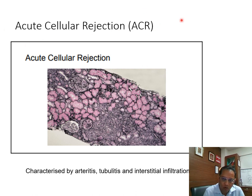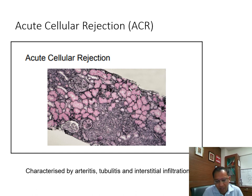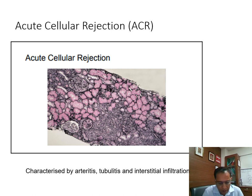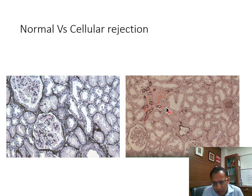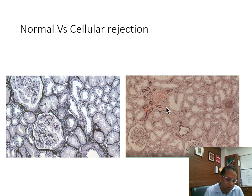The second early challenge is ACR or acute cellular rejection. It is not seen as often nowadays because of the immunosuppressive regimens we follow — they are very potent, and we have good induction protocols. It is characterized by arteriitis, tubulitis, and interstitial infiltration mainly of acute neutrophils and other cells. If you compare a normal kidney biopsy with this cellular rejection, you can see these inflammatory cells have infiltrated, and that is why you can safely say this is acute cellular rejection, though it is seldom seen nowadays.